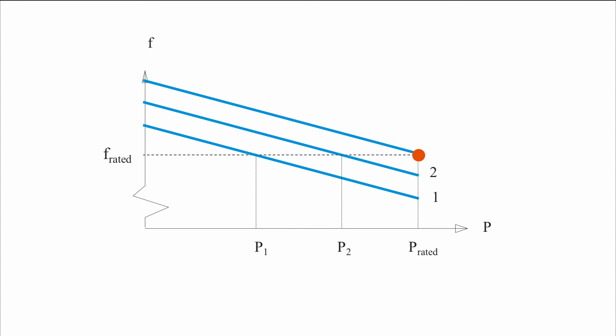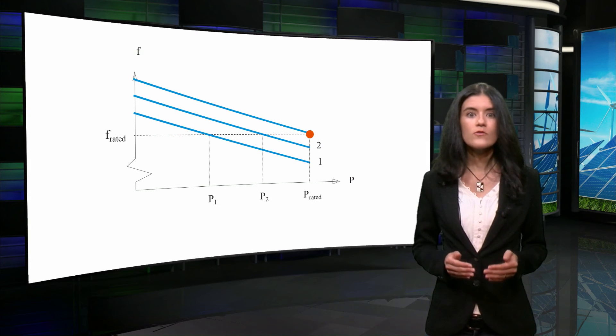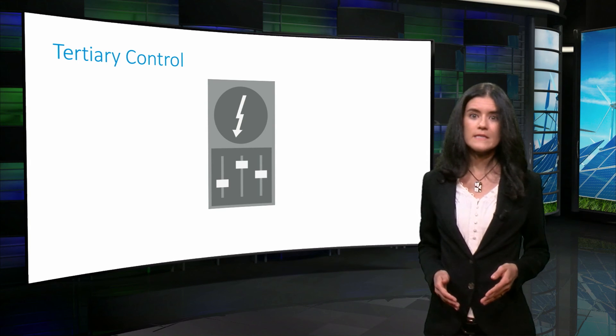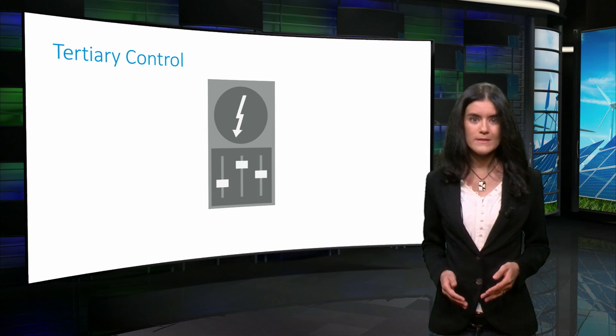In the figure, you can observe how the secondary control is used to modify the setting of the speed governor, in such a way that the frequency is brought back to the original reference. There is another control mechanism that operates in traditional power systems.